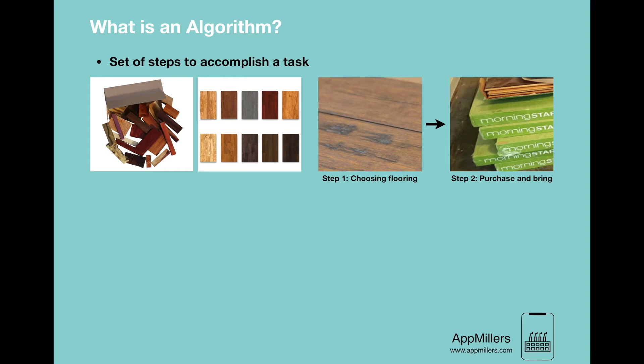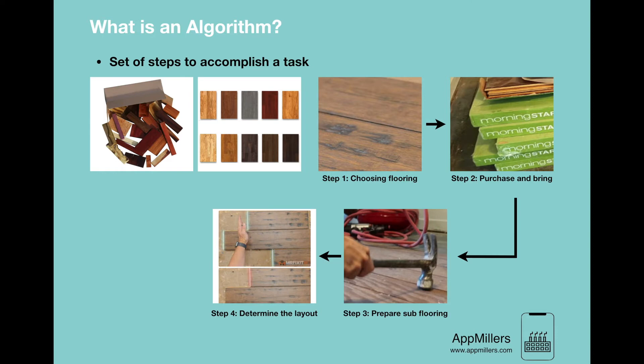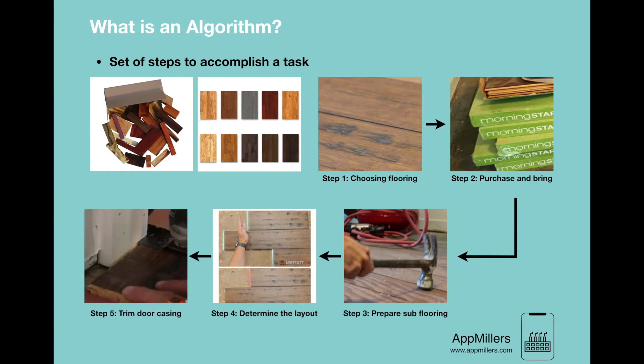The next step is to prepare subflooring. Then you need to determine the layout of flooring in the space. Finally we trim the door casing and our floor is ready. So as you see we have completed a set of steps to accomplish our task of flooring.